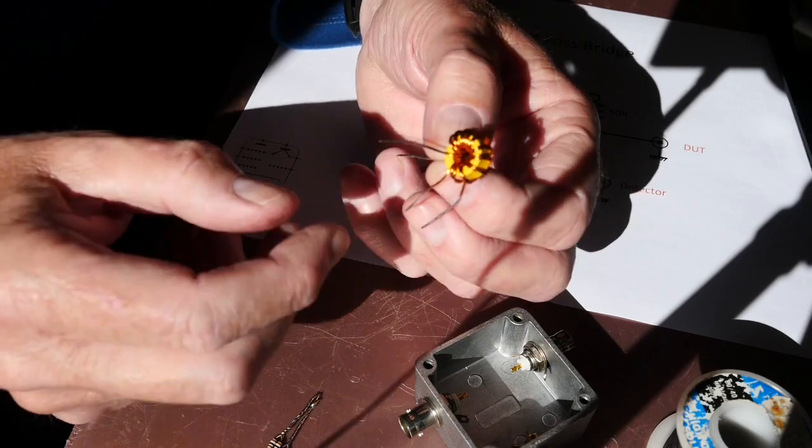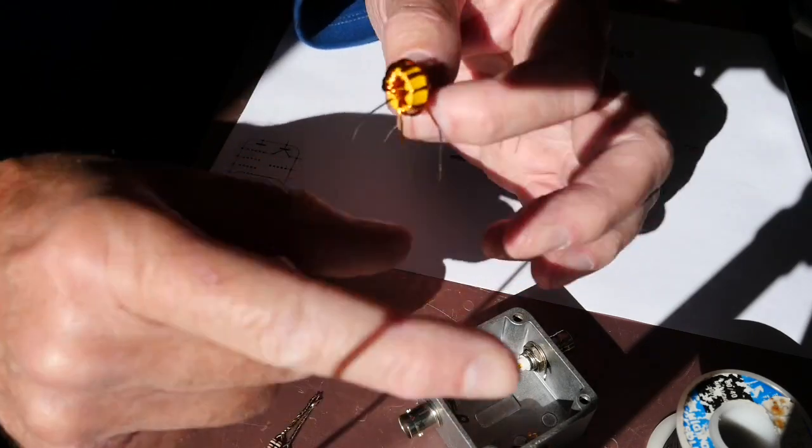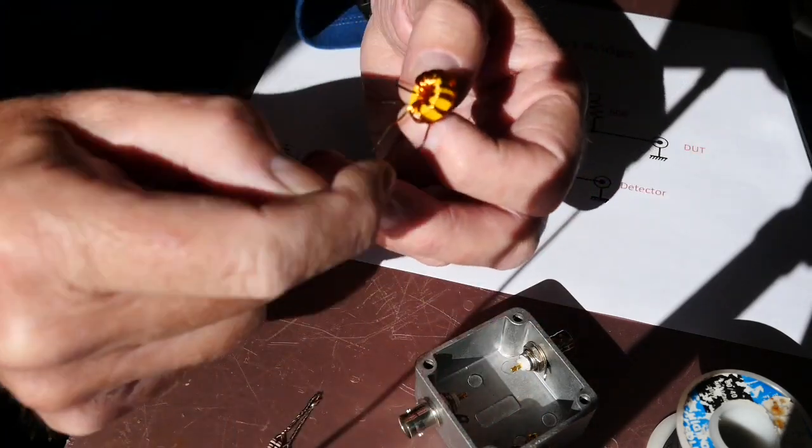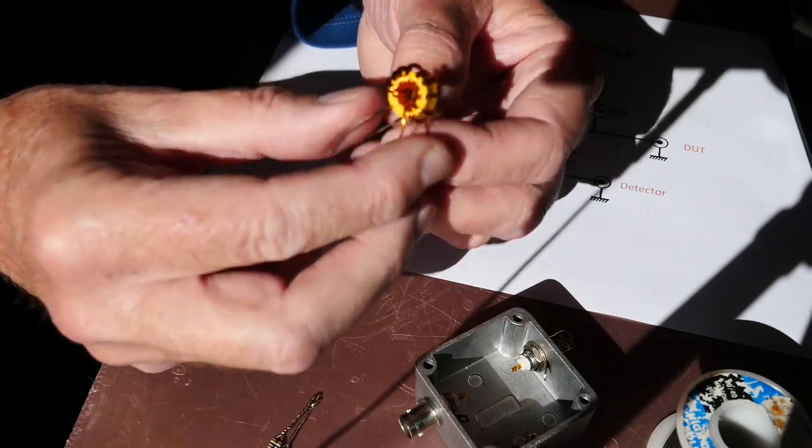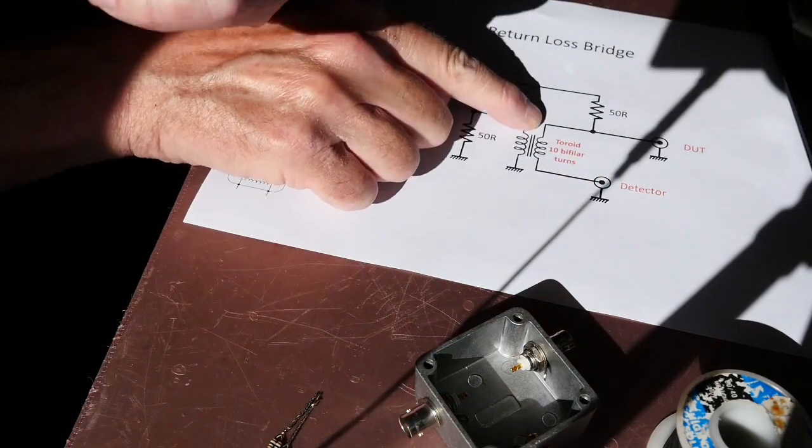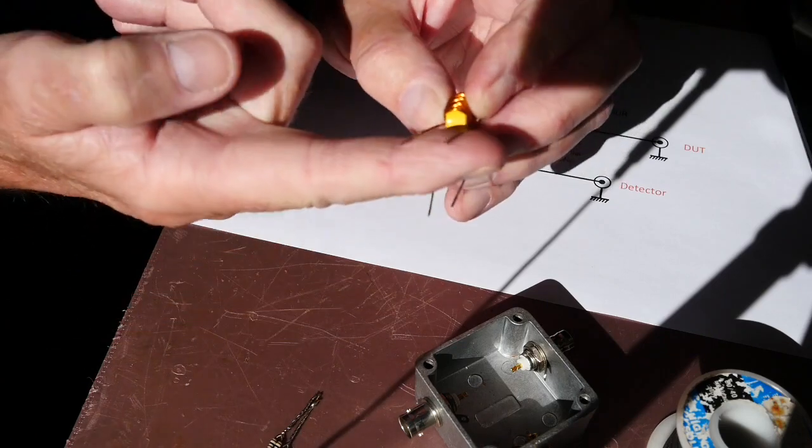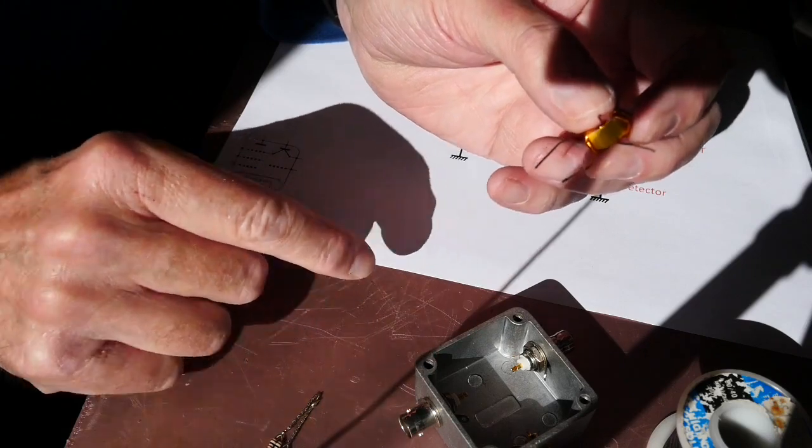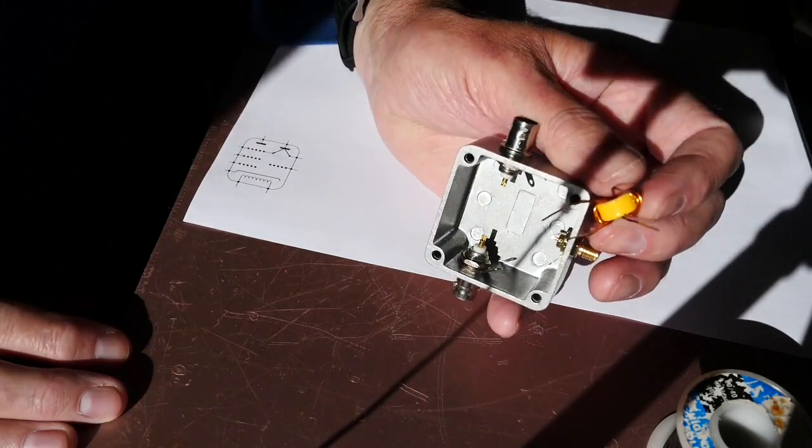I've wound the toroid already. Here it is, 10 turns bifilar wound. And if you've done this before you can skip to the next bit. If not just take a piece of enamel copper wire of the correct gauge. I've just folded a length in half, made the 10 turns and then cut the fold at the top and then just used a meter in continuity mode to identify each of the windings. So I've got a little bit of black pen on these two, that's one winding and that's the other. So I'm going to get the soldering warmed up, fit the first resistor and then I'll come back and show you how progress is.